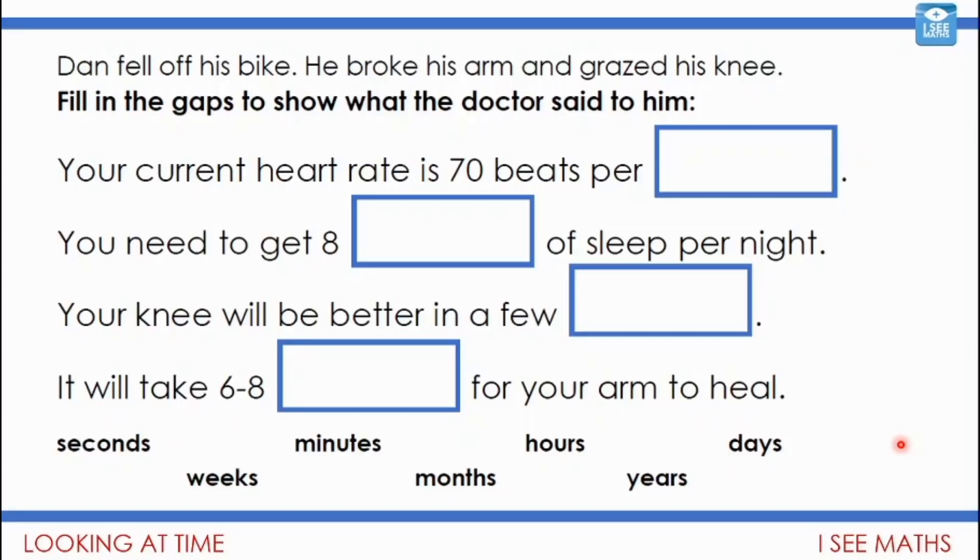The doctor would say your current heart rate, how quickly your heart beats—we tend to measure beats per minute. That's 70 beats a minute, about normal. You need to get eight hours of sleep per night. Your knee will be better in a few days, but it generally takes about six to eight weeks for an arm to heal. There's the appropriate units of measure.